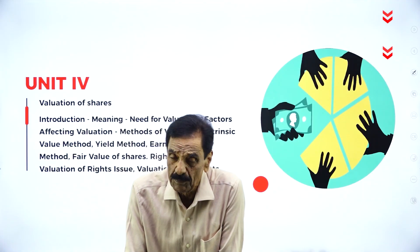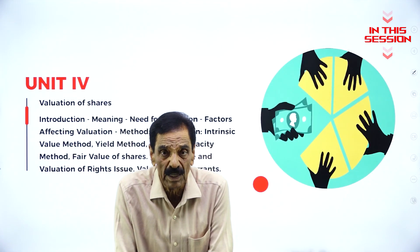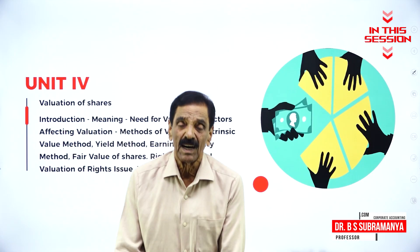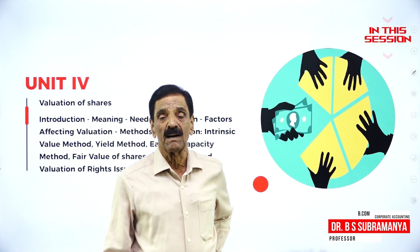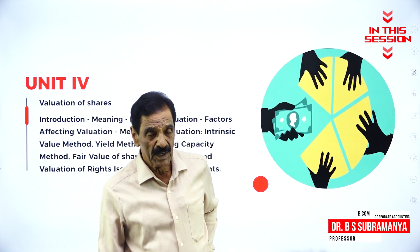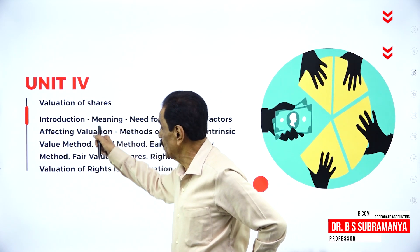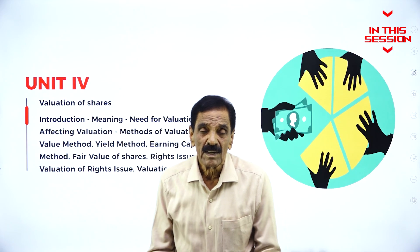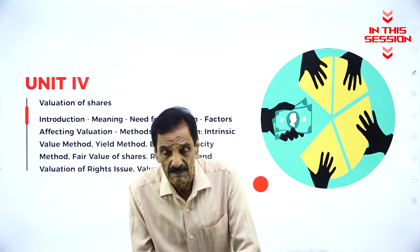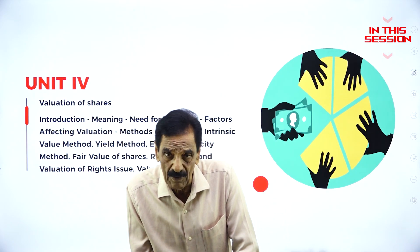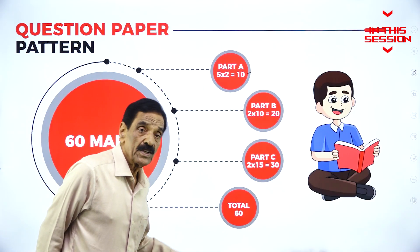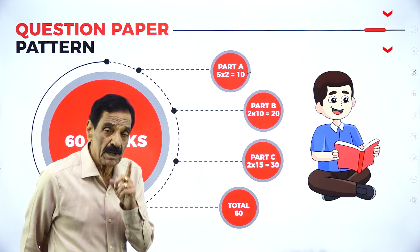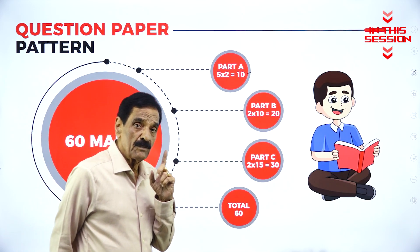There are two types of shape — equally shape and reference shape. We are going to share the value of equally shape. We are going to value out of 60, and we are going to score a minimum of 24.